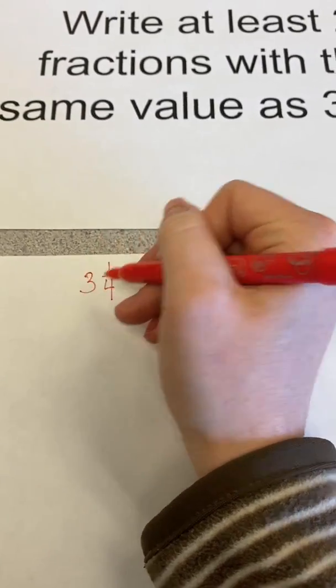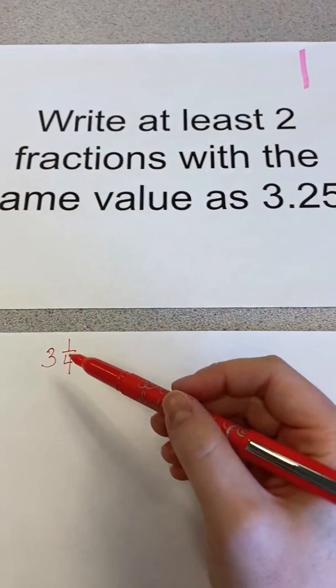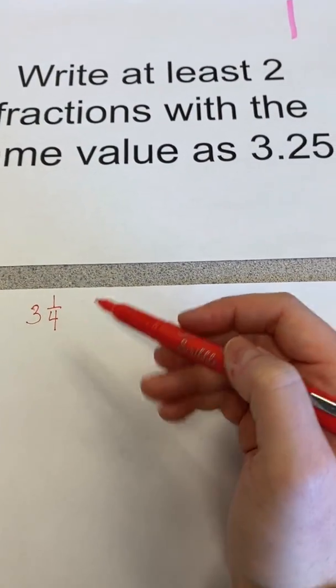So my mixed number, taking my decimal into a mixed number, would be the same as three and one-fourth.